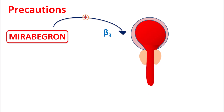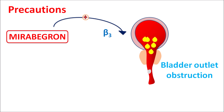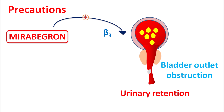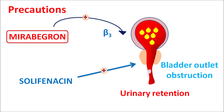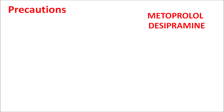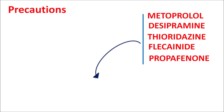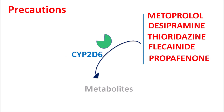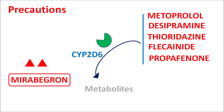In patients with bladder outlet obstruction, Mirabegron may reduce urinary flow, resulting in urinary retention. This side effect is more pronounced when combined with solifenacin. Additionally, drugs such as metoprolol (a selective beta blocker), TCAs like desipramine, antipsychotics such as thioridazine, and antiarrhythmics such as flecainide and propafenone are all metabolized by the CYP2D6 enzyme.